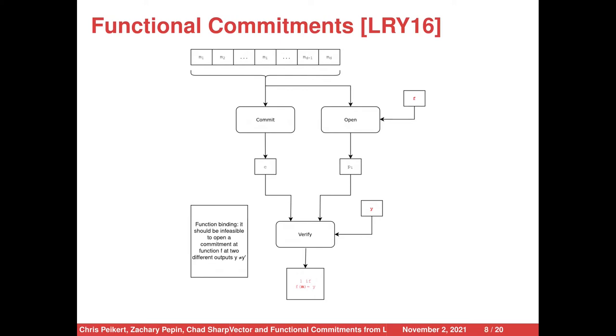The security property for functional commitments is called function binding, which states that it should be infeasible to open a commitment at a function f at two different outputs, y not equal to y prime.